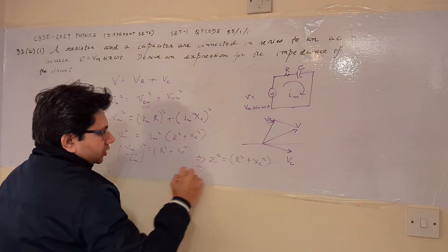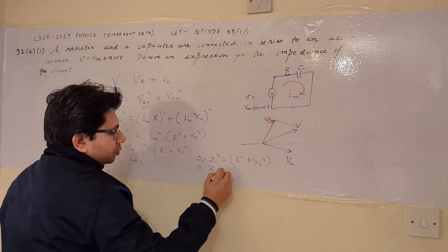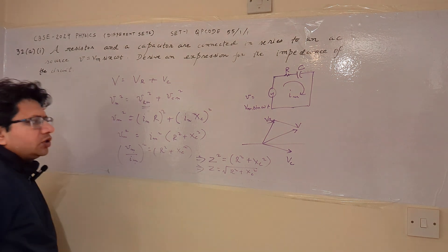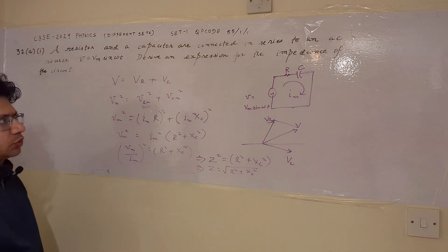Or in other words, we can say that the impedance is square root of R square plus Xc square. So this is the final expression which we have to derive.